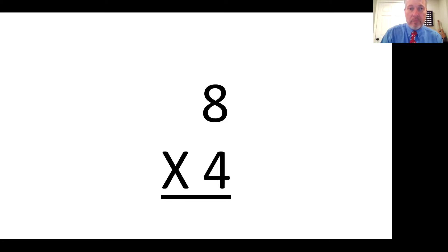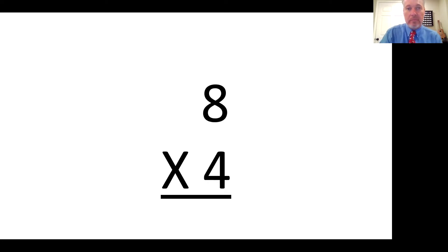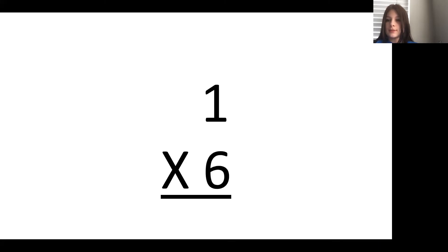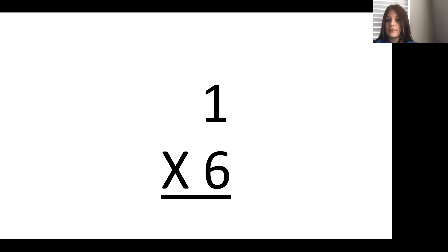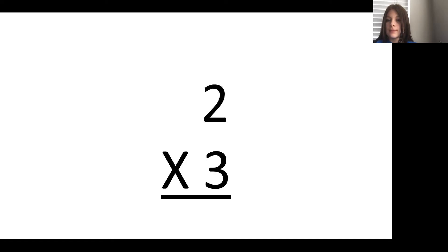Good. This one? 8 times 4 is 32. Good. How about this one? 0. And this one? 3. This one? 7 times 5 is 35. Good. This one? 3. 6. Good. This one? 7 times 5 is 35. 8 times 4 is 32. Good. 0. 3. 6. 8. Good. This one? 7 times 5 is 35. Good. This one? 8 times 4 is 32. Good. 6. 6. 8. 6. Good.